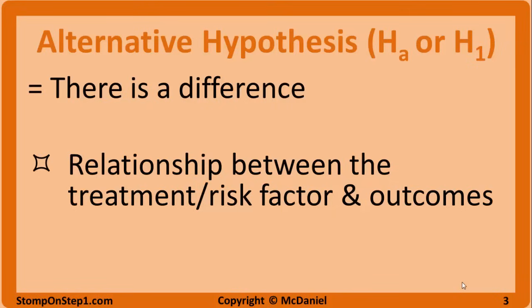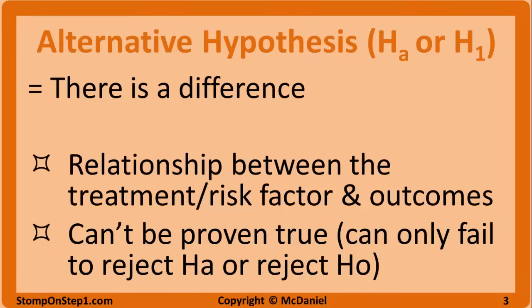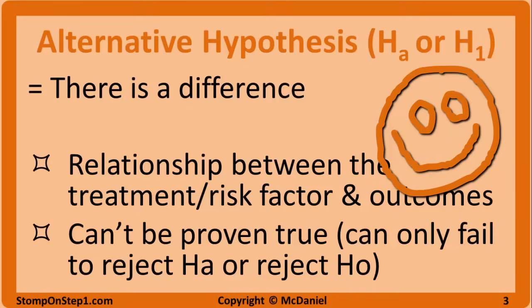The alternative hypothesis is denoted by H subscript A or H1. As you might expect, it is the opposite of the null hypothesis. This hypothesis states that there is a difference between groups — the research groups are different with regard to what is being studied. In other words, there is a relationship between the risk factor or treatment and the occurrence of health outcomes. Obviously, the researcher wants the alternative hypothesis to be true. If HA is true, it means they discovered a treatment that improves patient outcomes or identified a risk factor important in the development of a health outcome.